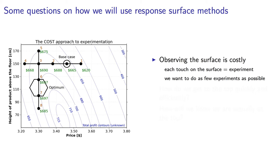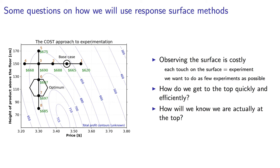Each time you touch the surface, or run an experiment, it might cost hundreds of dollars. How do you get to that optimum efficiently? How do you know that you've reached the optimum with only the information from the taps of the pole?